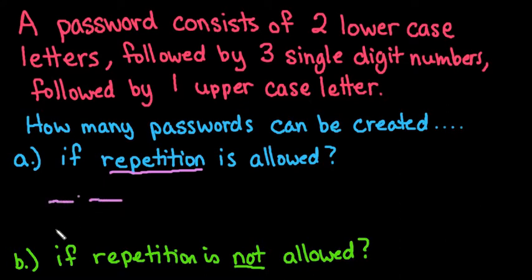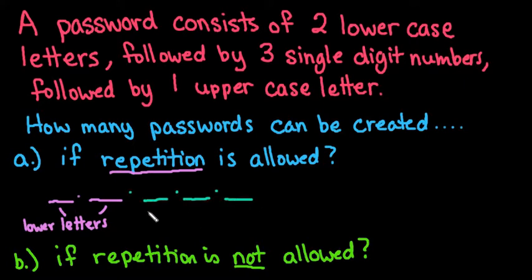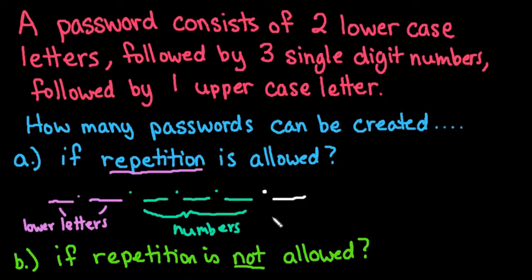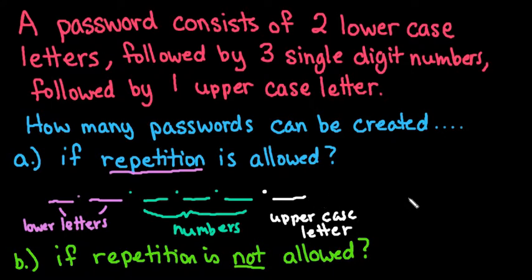I'm going to set it up where I identify what each position is. We have two lowercase letters followed by three digits — numbers selected from zero through nine, so single-digit only — followed by one uppercase letter. The pattern for all three situations I'm going to cover will be the same: two lowercase letters, three numbers, one uppercase letter.